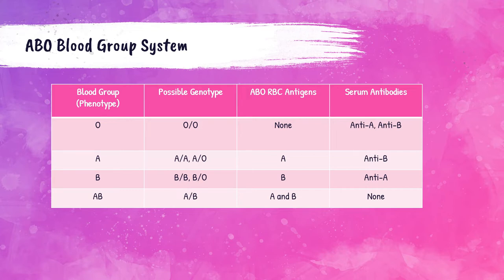For AB blood type patients, their genotype is AB, meaning they inherit an A gene from one parent and a B gene from the other. Both A and B genes are codominant, meaning they are both phenotypically expressed. So they have both A and B antigens present on their red blood cell surface. They do not have any naturally occurring ABO blood group antibodies in their serum, and because of this, they can receive red blood cell donations from any blood type.